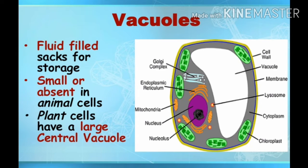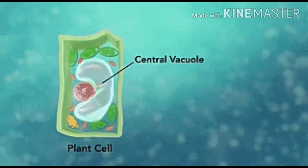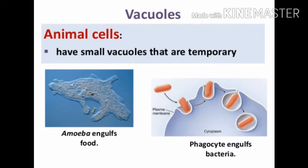Vacuoles are sac-like structures in the cell. In mature plant cells, they occupy most of the space within the cells and help to store food, water and wastes. In addition, the vacuoles also provide turgidity to the plant cell. In animal cells, vacuoles are smaller and may be greater in number. They help in waste removal and digestion.